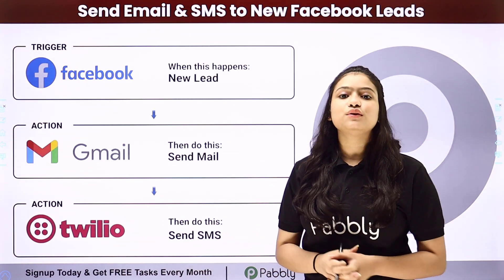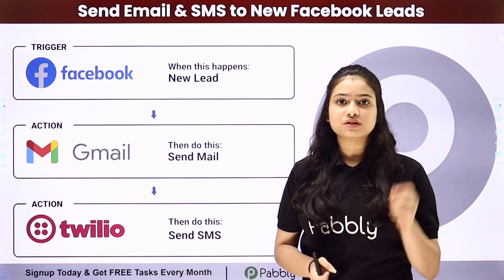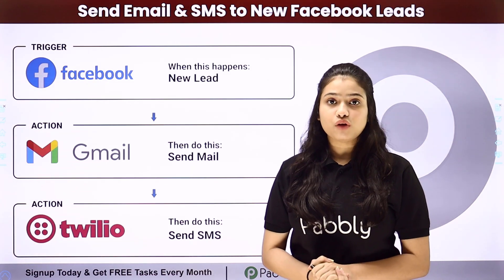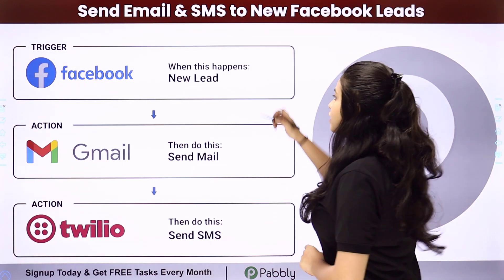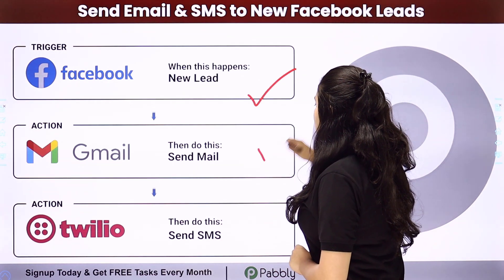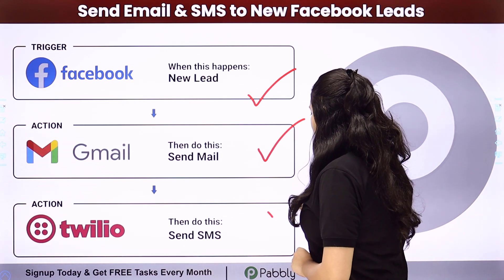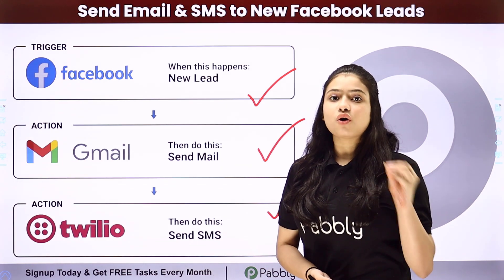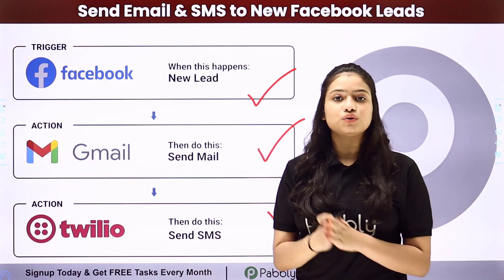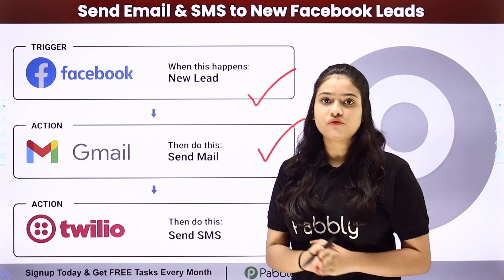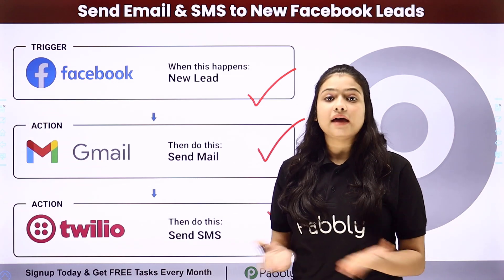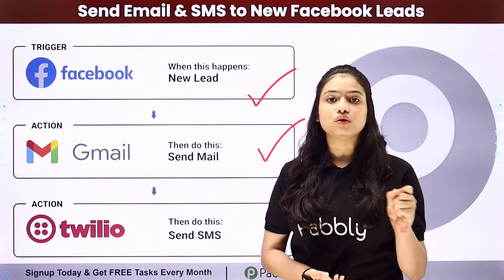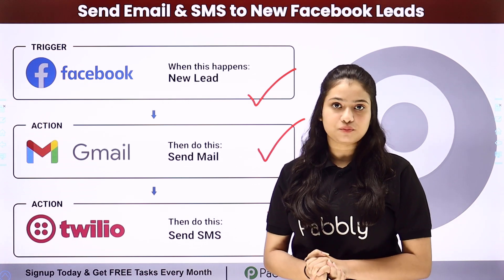For that we are going to use Pabbly Connect, which is an amazing automation and integration software. We have Facebook lead ads in our trigger, and Gmail and Twilio in our action. In place of Twilio, you can also use any other application through which you want to send SMS to your Facebook leads. We are going to connect all of them using Pabbly Connect in order to automate this entire process.